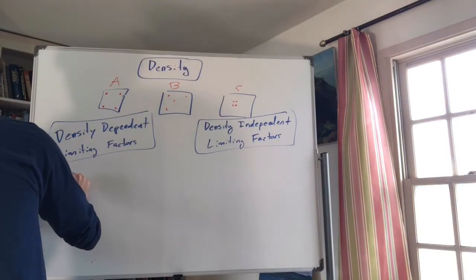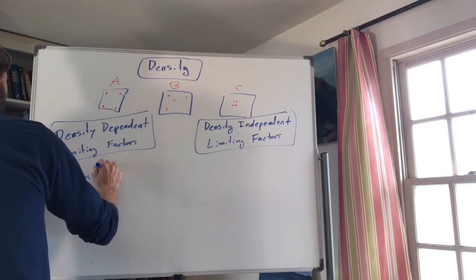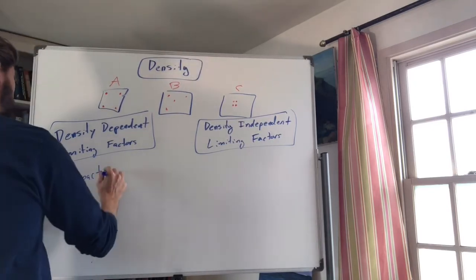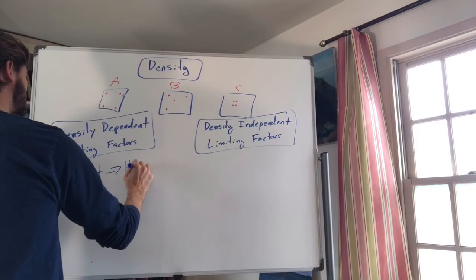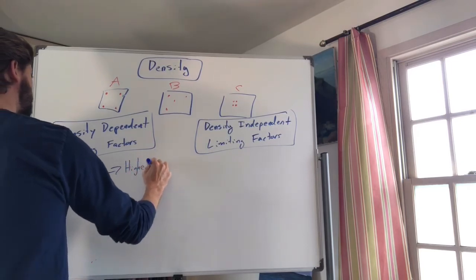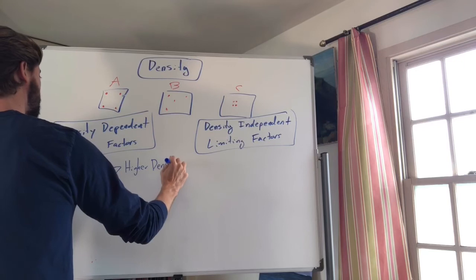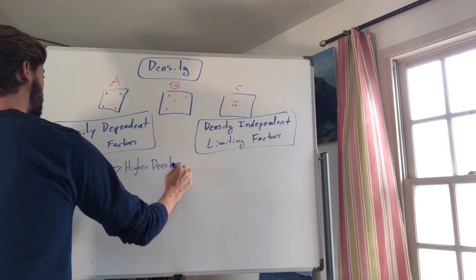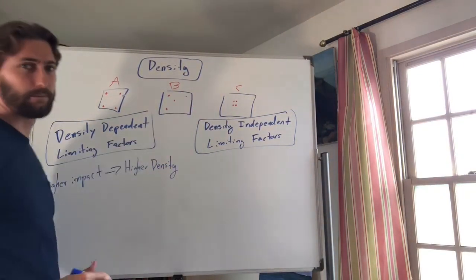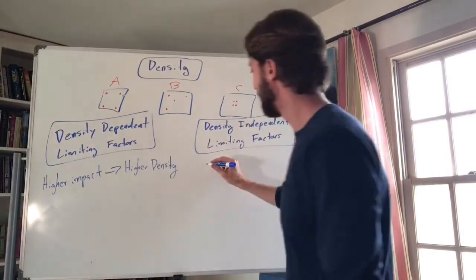Density dependent factors have a higher impact with a higher density — they have a bigger impact on Box C because the individuals are closer together and there are more of them. Density independent factors have the same effect whether the population is concentrated or not — it doesn't matter.